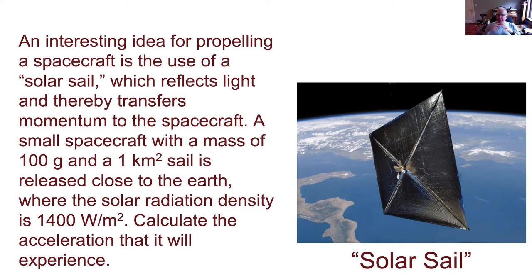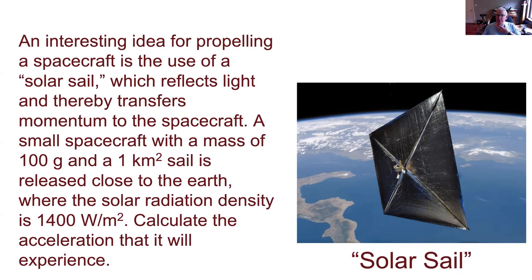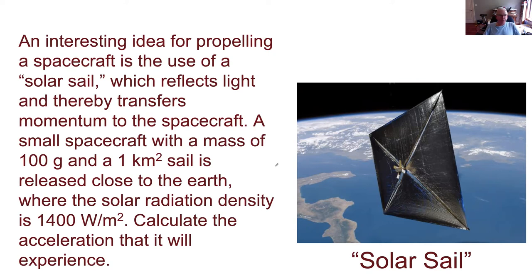The momentum from the light that impinges on the sail is transferred to the sail and therefore to whatever payload is attached to it. We're going to do a quick calculation: a small spacecraft with a mass of 100 grams — about a quarter pound — attached to a one square kilometer sail, released at an altitude where the solar radiation density is 1400 watts per square meter. We'll calculate the acceleration the spacecraft experiences from that radiation impact, assuming the radiation strikes the sail perpendicularly.